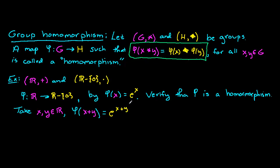By our rules of exponents, this is the same as e^x · e^y. And by definition of φ, this is simply φ(x) · φ(y). Notice that these elements are elements in our yellow group, the real numbers take away 0, and so the binary operation here is multiplication.